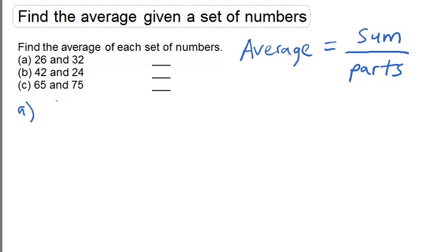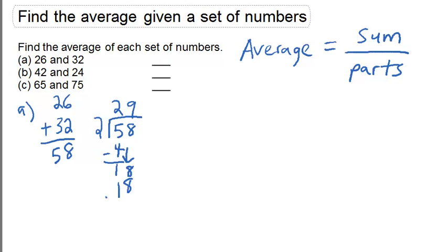If we look at example a, the sum of 26 and 32 comes out to 58. Since there are two numbers, or two parts, we divide 58 by 2, and we're left with an average of 29.